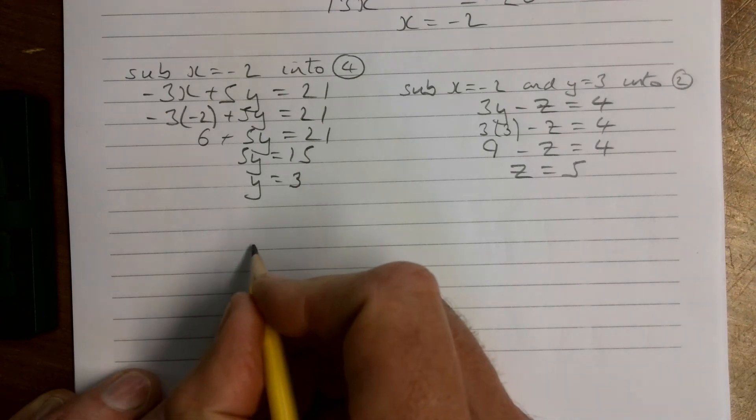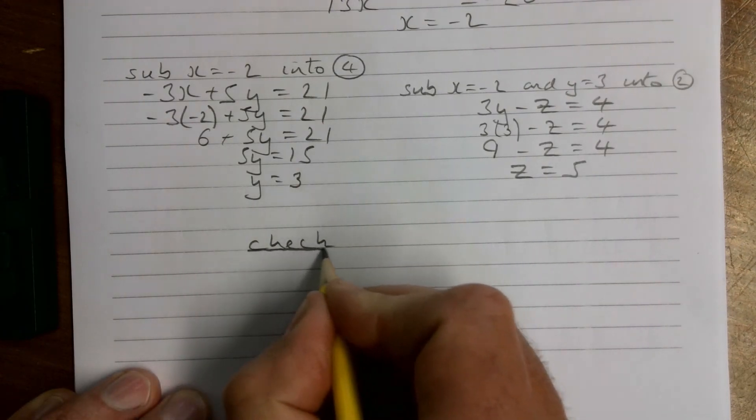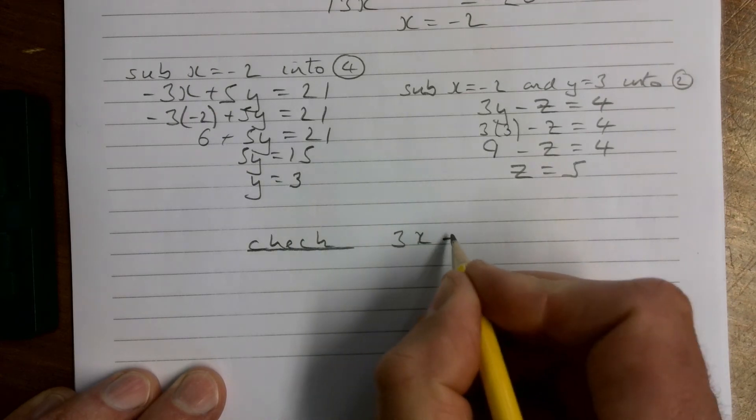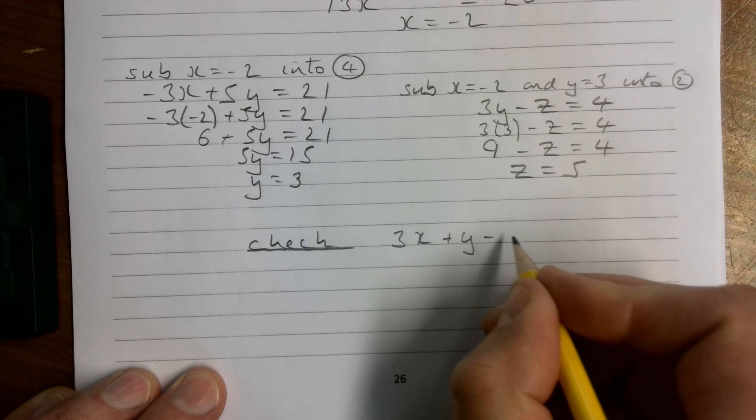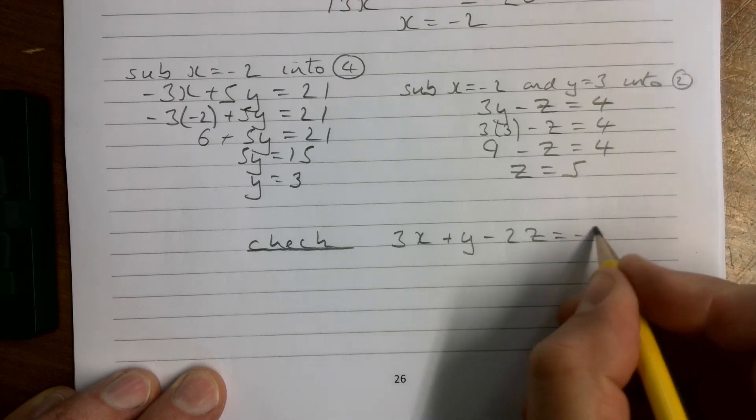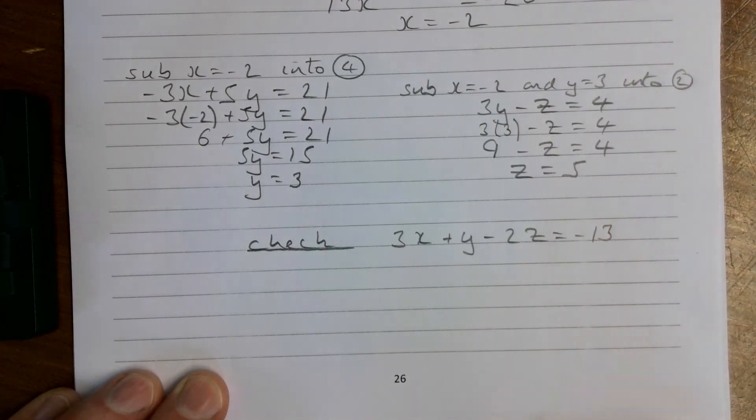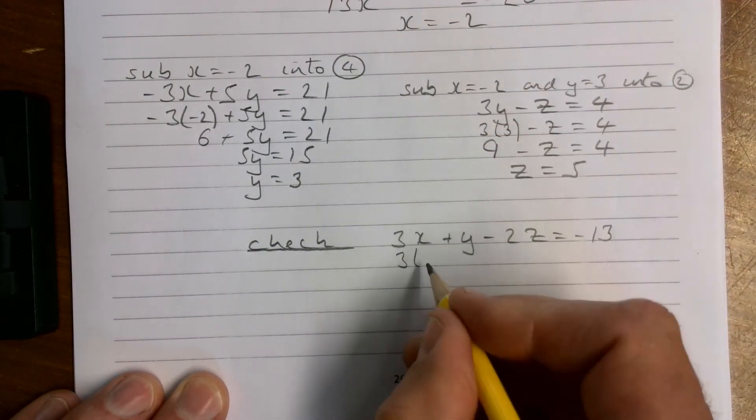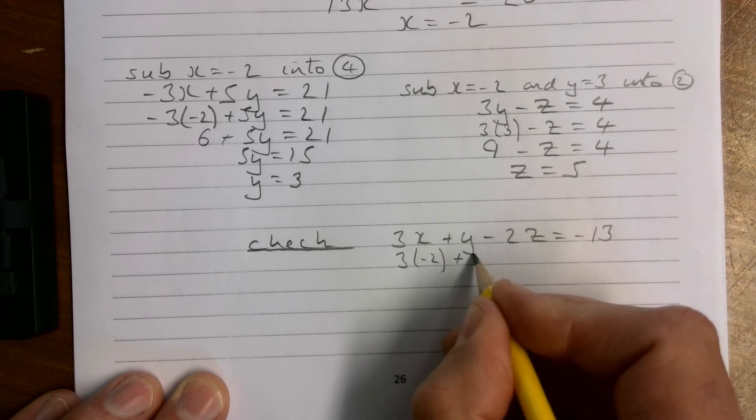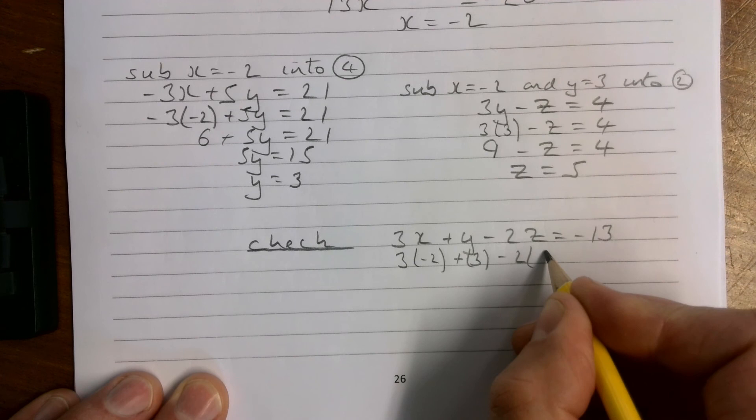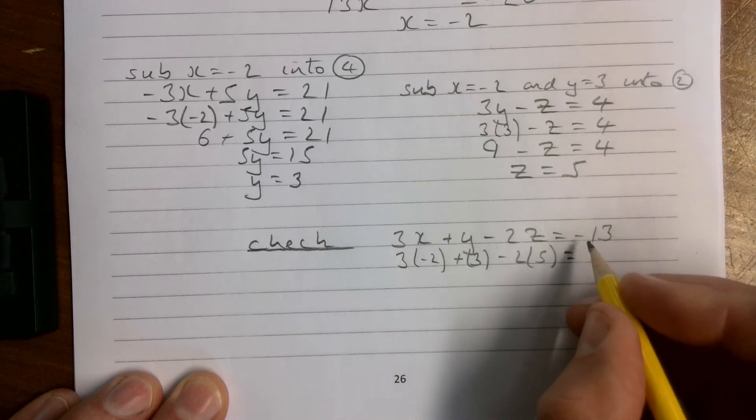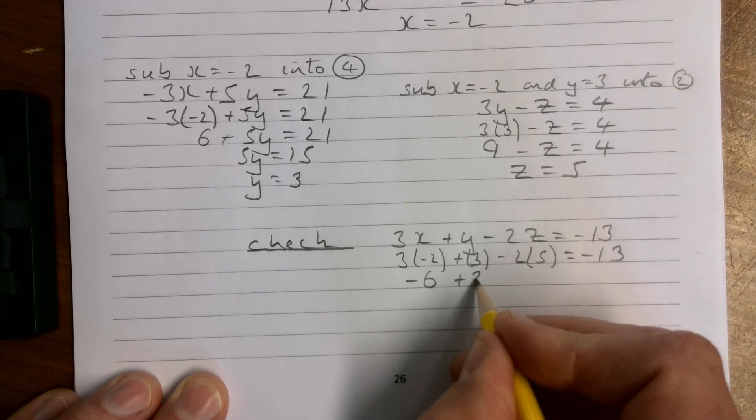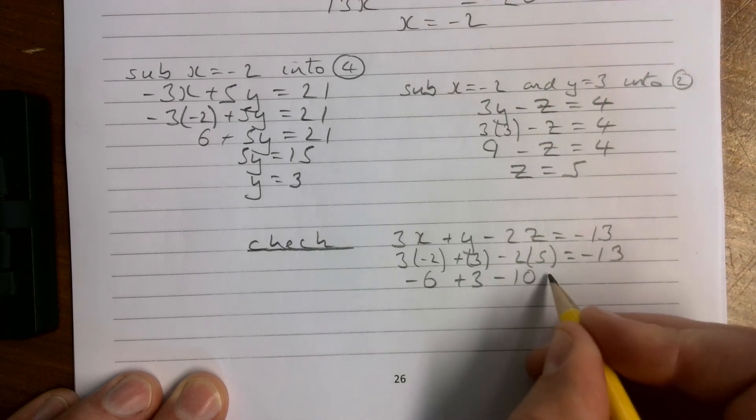Just check at the end again to make sure we've got the right numbers with one of the different equations. So we have 3x plus y minus 2z should equal minus 13. Let's check and see if we're right. 3 times minus 2 plus 3 minus 2 times 5, we hope, is minus 13. Minus 6 plus 3 minus 10 is indeed minus 13, so we're good.